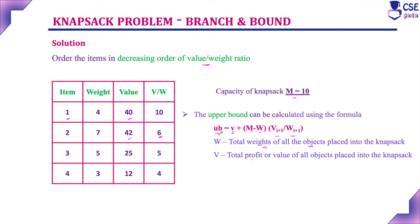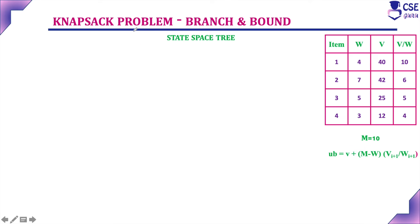With this, we will implement the construction of the state space tree. In the knapsack problem using branch and bound technique, the construction of the state space tree is unique — the state space tree will be a binary tree. Only two nodes will be there: left subtree and right subtree. Left subtree represents including an item into the knapsack. If you are excluding that item, it will be added as a right subtree.